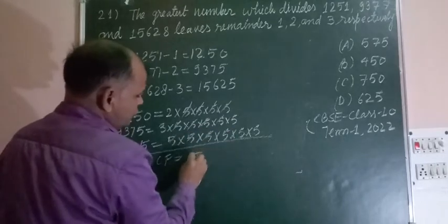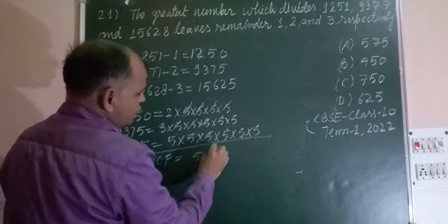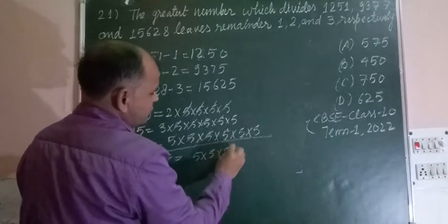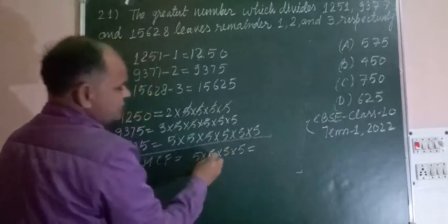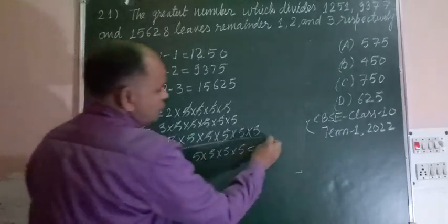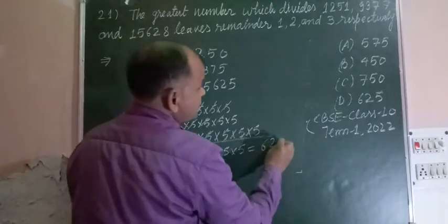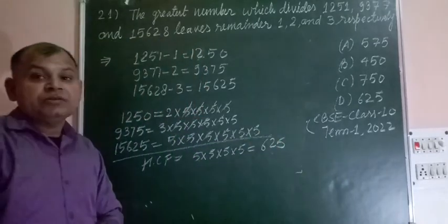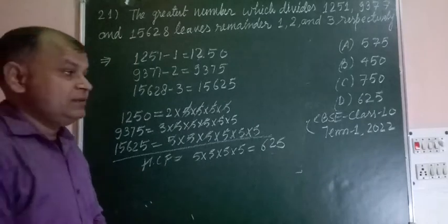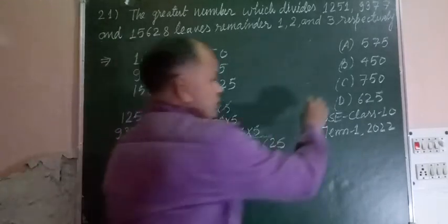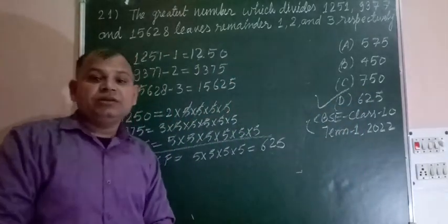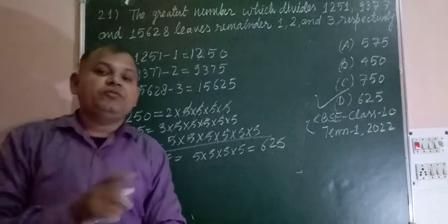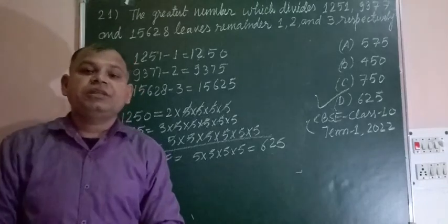The HCF is 5 times 5 times 5 times 5, which equals 625. So the greatest number is 625. This is the solution of the question. I hope you got it. Thanks.